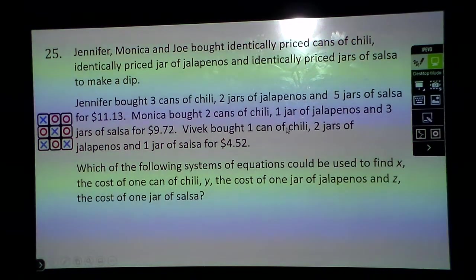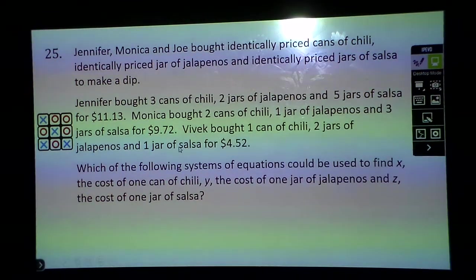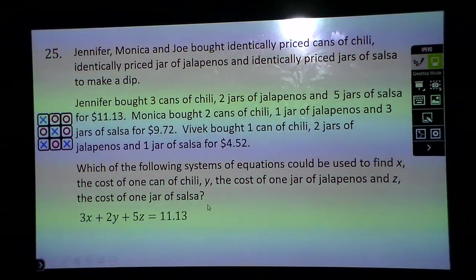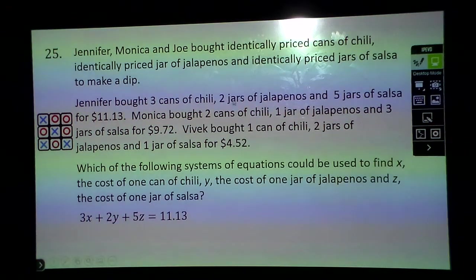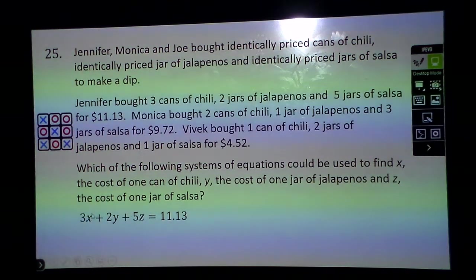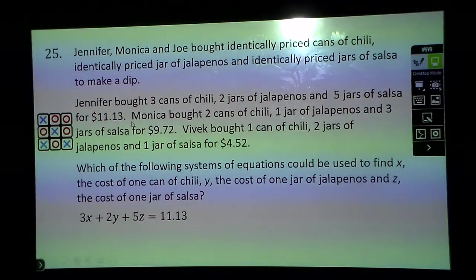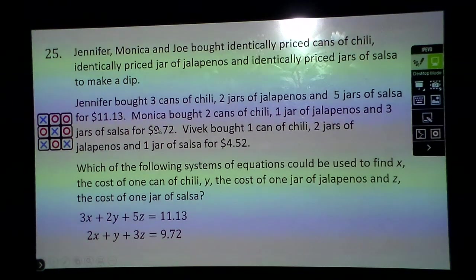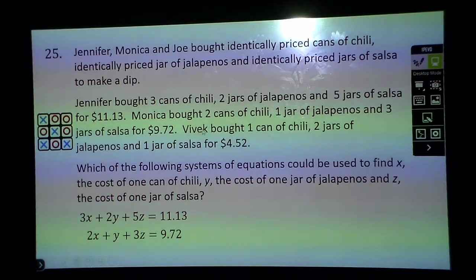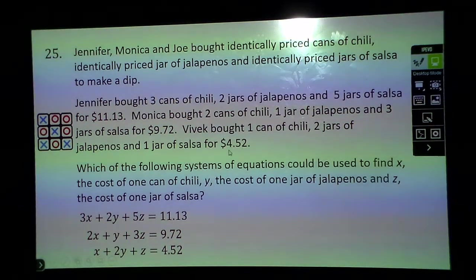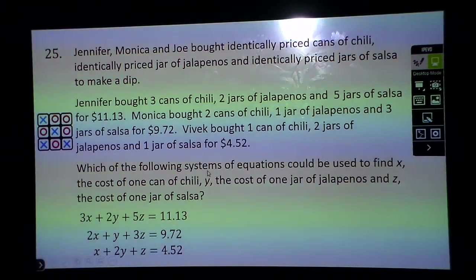Here's what we're going to do using X for chili, Y for jalapenos, and Z for salsa. Three chilies, two jalapenos, five salsas equals $11.13, so that's 3X + 2Y + 5Z = 11.13. Now I'm going to go to Monica. She's going to have 2X + 1Y + 3Z = 9.72. And Vivek's going to have 1X + 2Y + 1Z = 4.52. I believe that's all I had to do on this one, just write the equations.